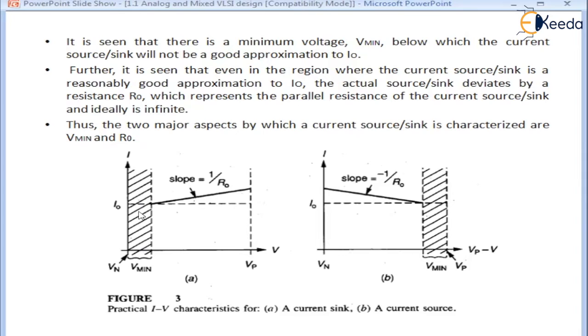Where the current sink is a reasonably good approximation to I0, the actual sink and source deviate by a resistance R0, which represents the parallel resistance of the current source or sink, and ideally this resistance is infinite.